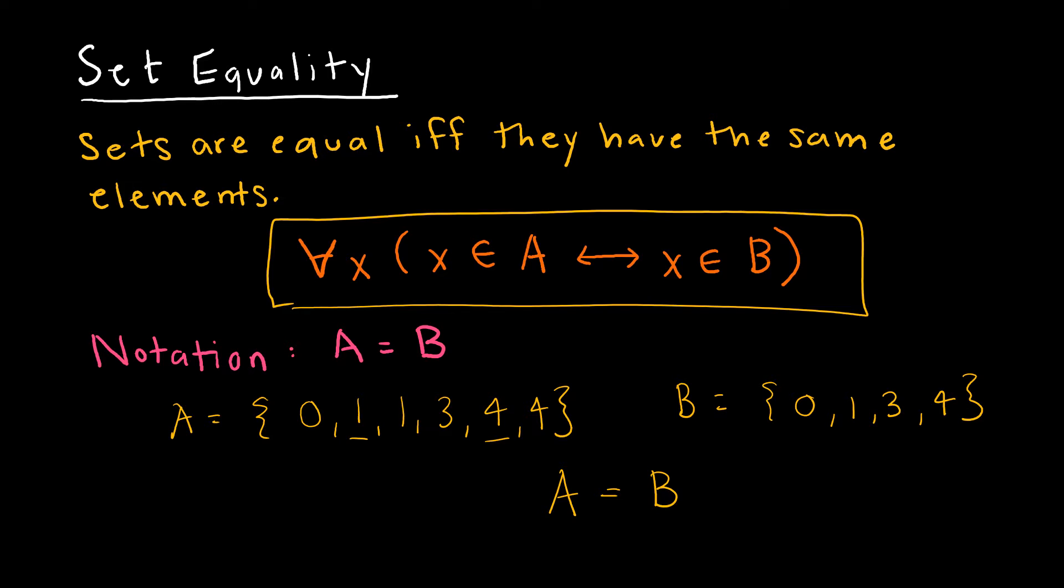It doesn't matter if there are duplicates. However, if B included 5, now all of a sudden A is not equal to B. So those sets would no longer be equal because B has a value or an element of 5 that is not contained in set A.